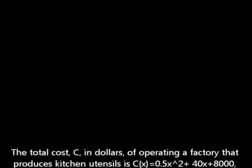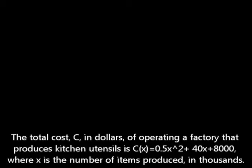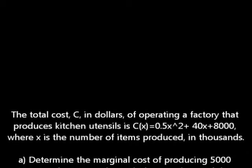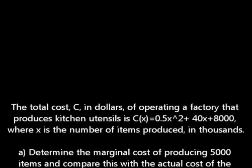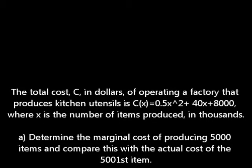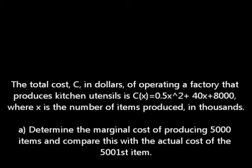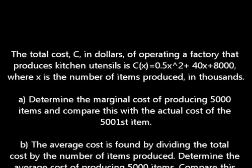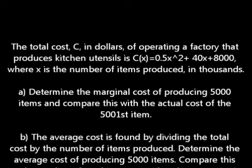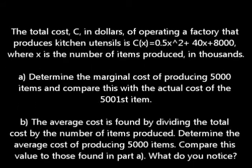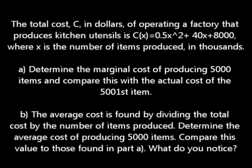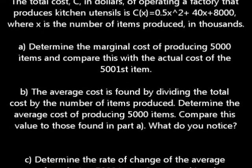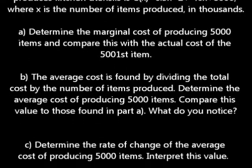The question says the total cost C in dollars of operating a factory that produces kitchen utensils is C(x) equals 0.5x squared plus 40x plus 8,000, where x is the number of items produced in thousands. Part A: determine the marginal cost of producing 5,000 items and compare this with the actual cost of the 5,001st item.